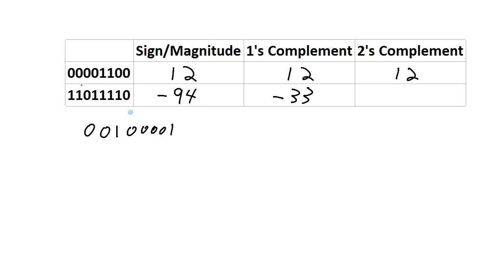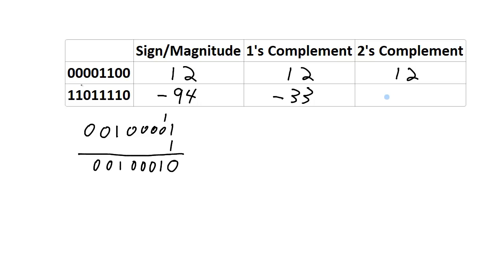In the 2's complement system, the first bit is 1 indicating a negative number. We perform the 2's complement operation on the entire number to find the magnitude. We've already flipped all the bits for the 1's complement step, giving 00100001, and now we add 1 to get 00100010, which has a magnitude of 34. So in the 2's complement system, that binary number is equal to negative 34.